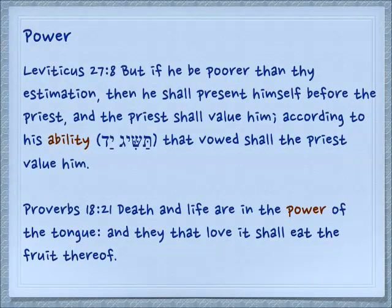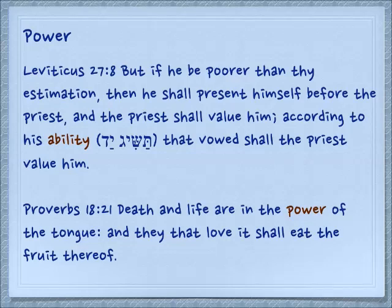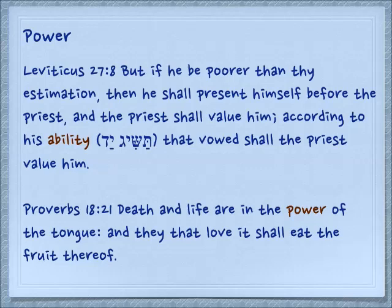In a bit of an idiomatic way, we see Leviticus 27:8: 'But if he be poorer than thine estimation, then he shall present himself before the priest, and the priest shall value him according to his ability.' The word 'ability' here is two words — the second one is Yad. The first is tasig, which means to achieve. So it's what he can achieve with his hand — what is his ability? In Proverbs 18:21: 'Death and life are in the power of the tongue, and they that love it shall eat the fruit thereof.' The word 'power' there is actually the Hebrew Yad — so your tongue has a hand, but don't spend too much time looking for it.